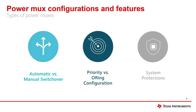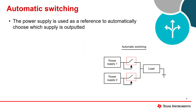I have divided up the main configurations and features of power muxes into three key topics we'll be diving deeper into. These are: automatic versus manual switchover, priority versus ORing configuration, and system protections. We'll begin with the topic of automatic versus manual switchover.